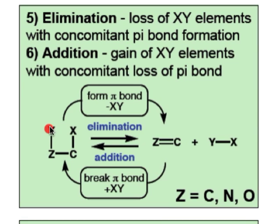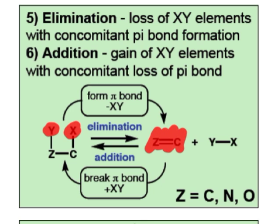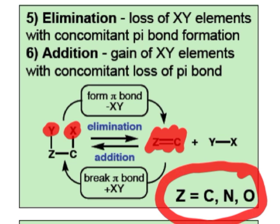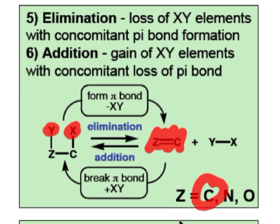Elimination reactions involve the loss of two groups, X and Y, from a substrate with simultaneous formation of a pi bond. Usually, Y is a hydrogen atom. Z can be carbon, nitrogen, or oxygen. In this series of videos, we'll focus on the example where Z is carbon.